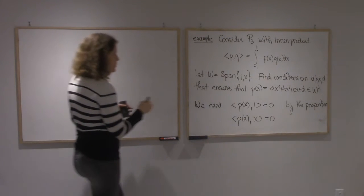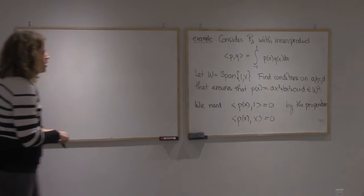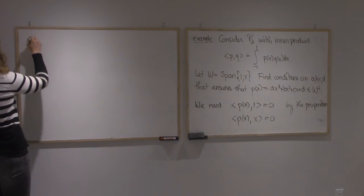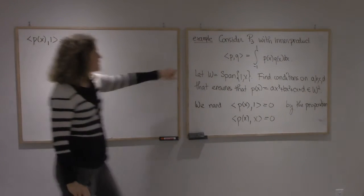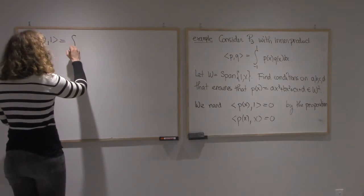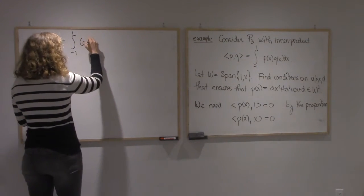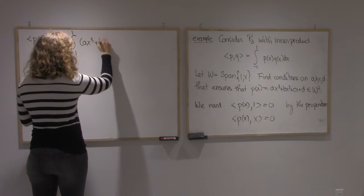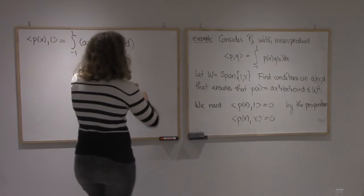Alright, so we need P(x), 1. According to the definition of the inner product, that's an integral from minus 1 to 1. P(x) is Ax³ + Bx² + Cx + D, and then times 1, dx equals 0.